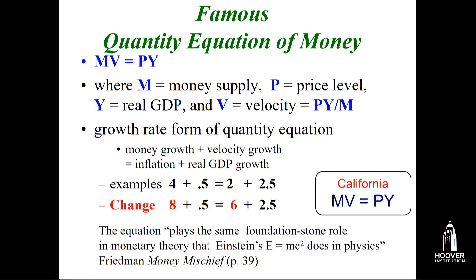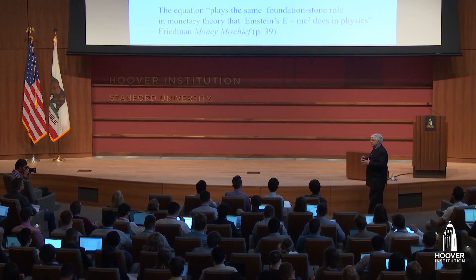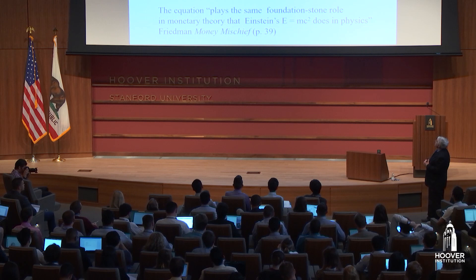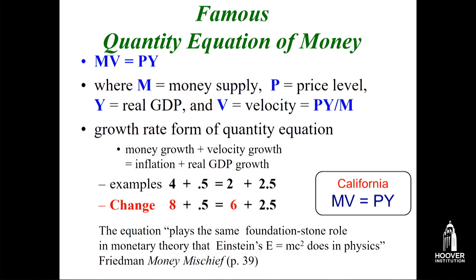When economists use the quantity equation, they usually use it in growth rate form. The growth rate of M times V is the sum of the growth rate of M plus the growth rate of V. So money growth plus velocity growth equals inflation — the percentage change in the price level — plus real GDP growth. For example: if money growth is 4% and velocity growth is 0.5% per year, and the inflation rate is 2%, then real GDP growth would be 2.5%.